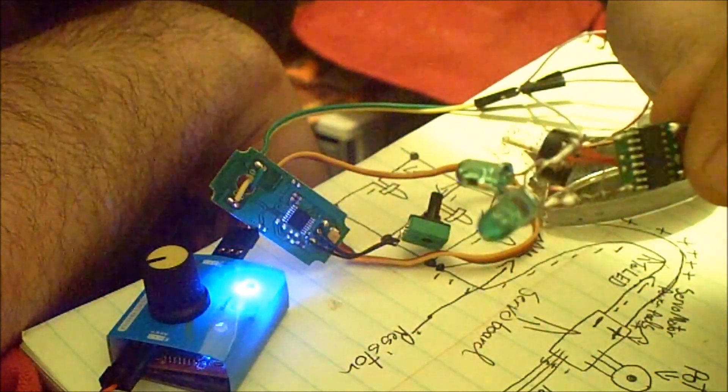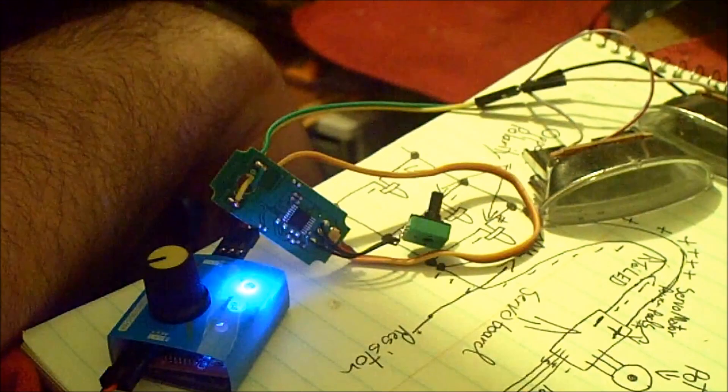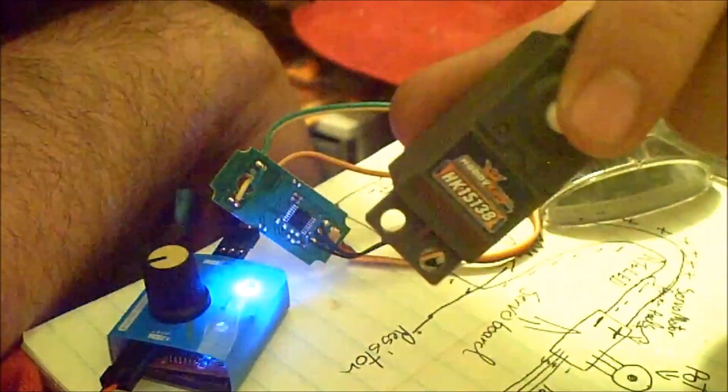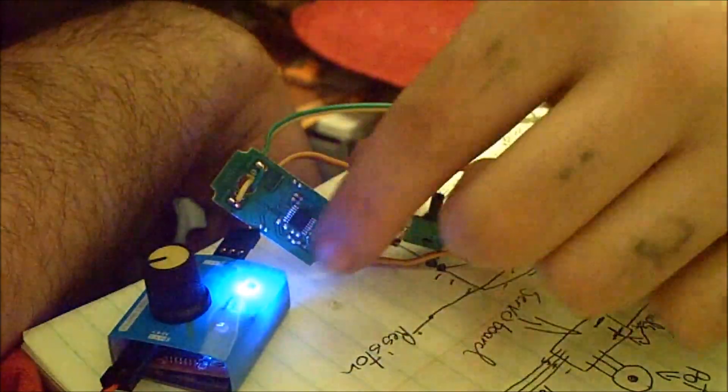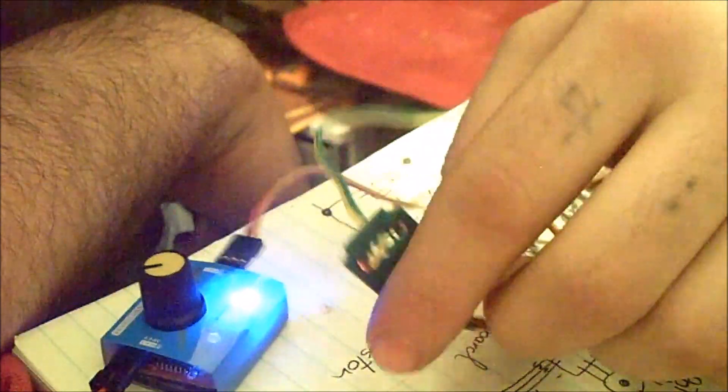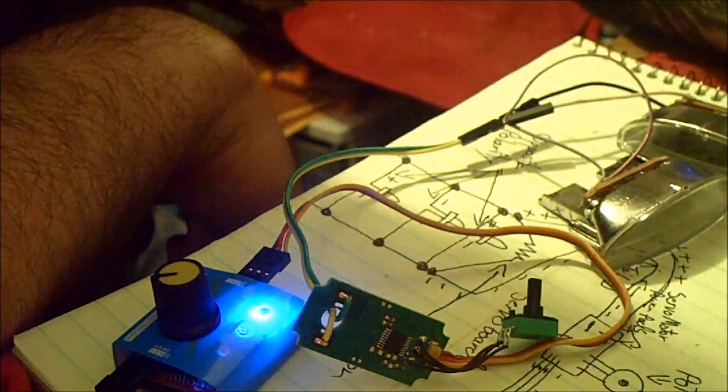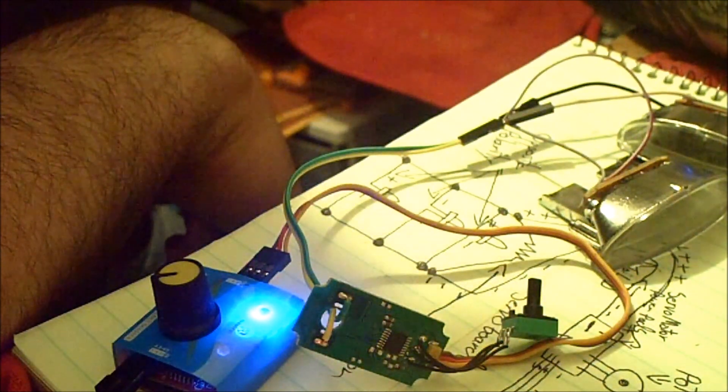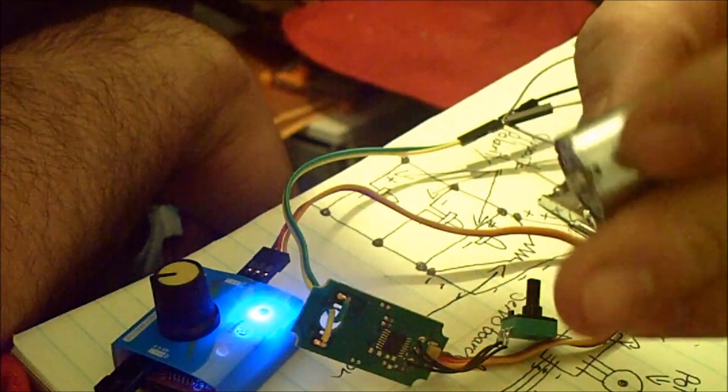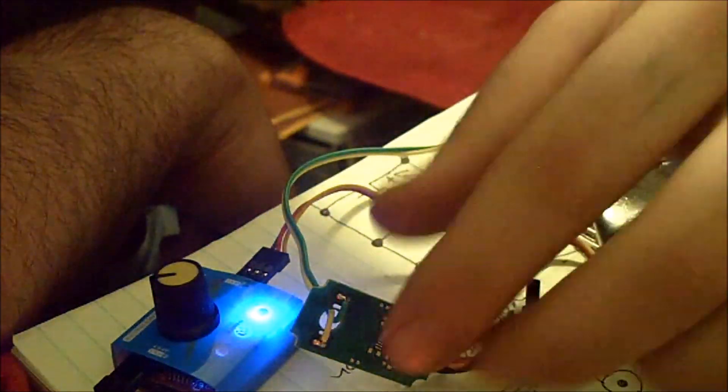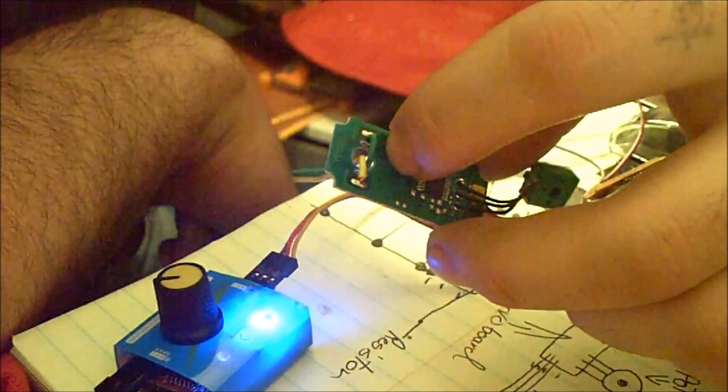But I gutted out this Hobby King $2.50 standard servo, got the board out of it right here. Now this board, it's actually really good electronics for $2.50. I mean look at that potentiometer, that's a really nice potentiometer. Here's the motor that was on it, it's actually soldered to the board, which actually makes for good stress relief for the wires to run them through the hole first and then solder on that back side.